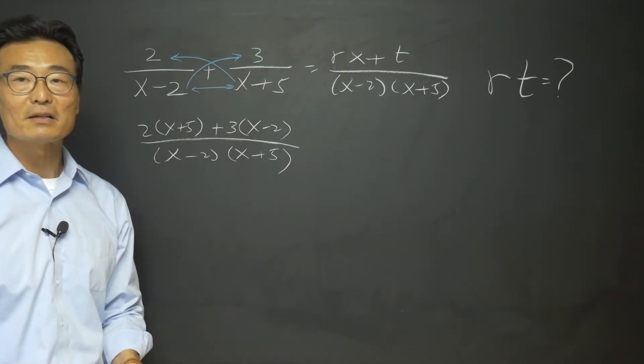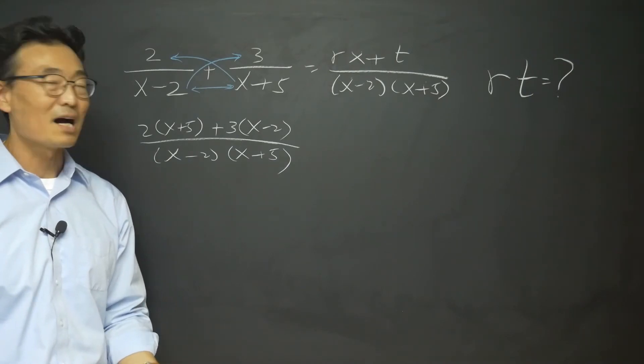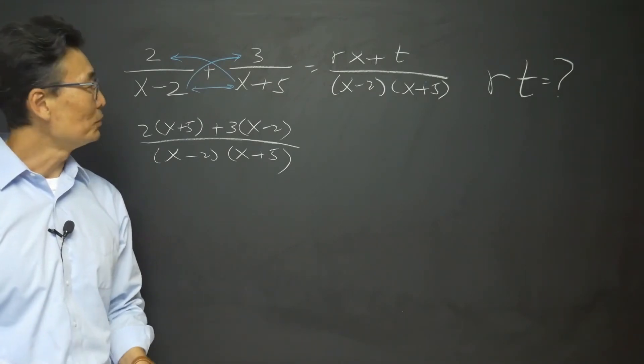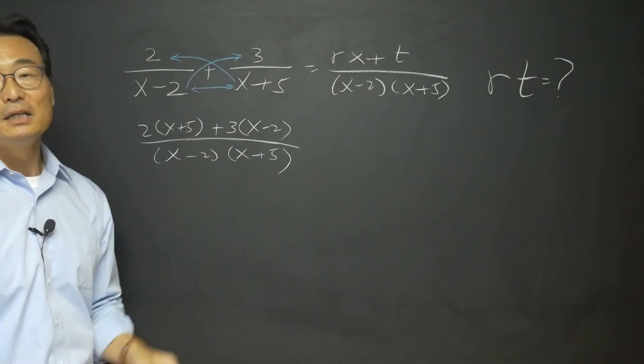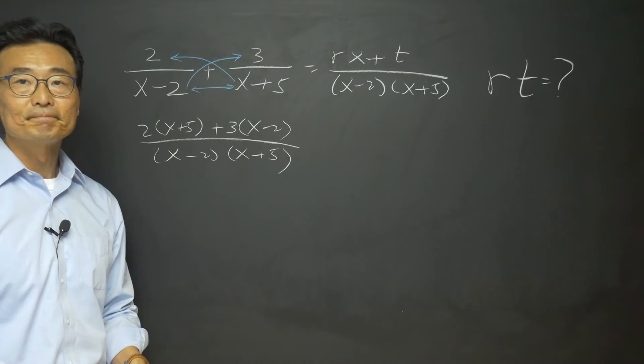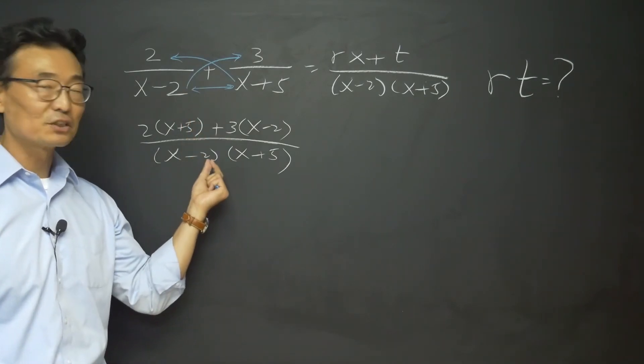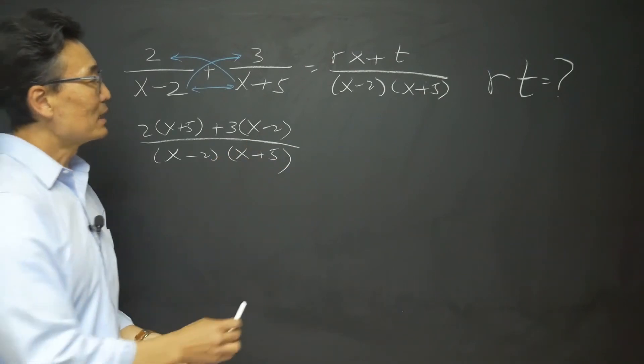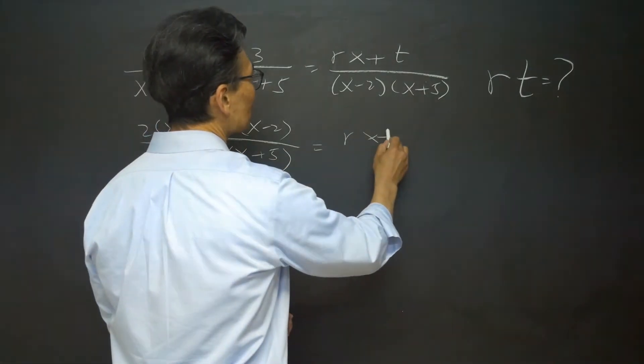This way, in one step, you're able to combine two fractions with variables rather than looking for the common denominator, multiplying the numerator, denominator, and all that mumbo jumbo. Rather, just use that one step across crisscross method, and you're able to combine two fractions with variables right away. Okay, the right side we have rx plus t all over x minus 2 times x plus 5.